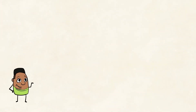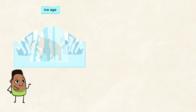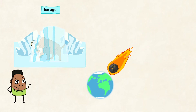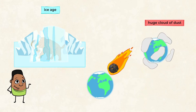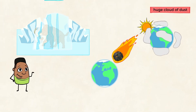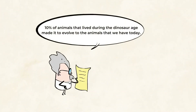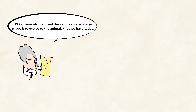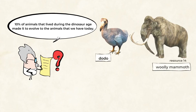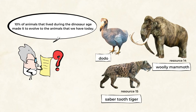A great example of a mass extinction event is the Ice Age, when the world got far too cold for some animals. Or the moment when a large comet struck the earth — a huge cloud of dust developed and did not allow the animals to breathe, or sunlight to shine through. Now, if only 10% of animals that lived during the dinosaur age made it to evolve into the animals we have today, think about how many animals have experienced extinction over the millions of years our earth has existed. Do you know of any animals that are now extinct? Do you know why they are extinct?